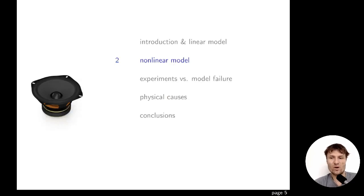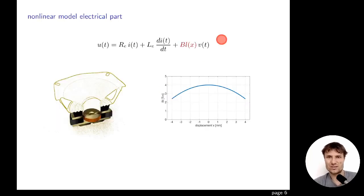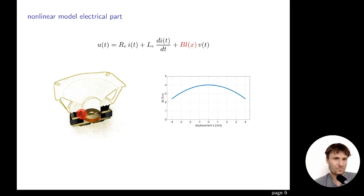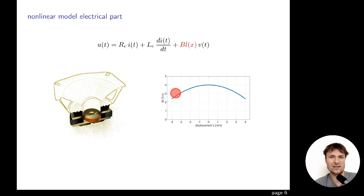When we want to approach more real-world loudspeaker behavior, we need to apply nonlinear models. The most important nonlinearity in the magnetic circuit is BL as a function of displacement x. The force factor drops when we reach higher values of displacement because the coil goes out of the magnetic gap and can see less and less magnetic flux, and consequently produces less and less force.